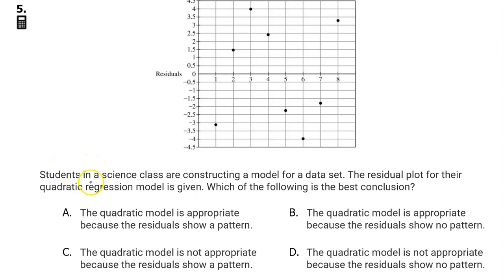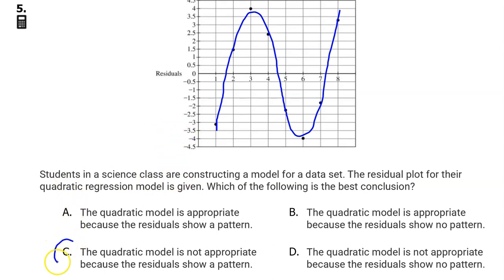Number 5. Students in a science class are constructing a model for a data set. The residual plot for their quadratic regression model is given. Which of the following is the best conclusion? I honestly have not read the answer choices yet, but off the top of my head, I'm seeing that the residual plot does show a pattern, a clear pattern, which means that the quadratic model is not going to be good. The answer is C. The quadratic model is not appropriate because the residuals show a pattern.